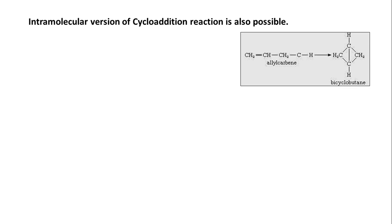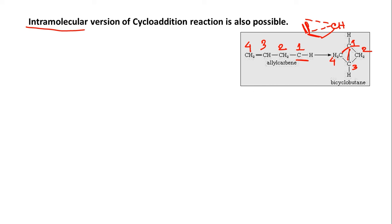Some more information: we can also have an intramolecular version of the cycloaddition reaction. Here we have taken allyl carbene — a C=C double bond and then a CH₂ carbene center. Numbering these carbons, there are four carbons total. Looking at the product and comparing the numbering, two new bonds are generated connecting these carbons. The product is bicyclobutane — a highly strained structure. This type of unusual compound can be made by this carbene cycloaddition method.